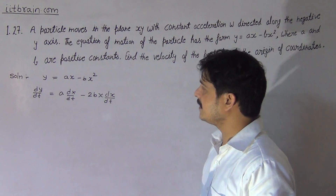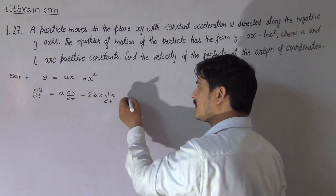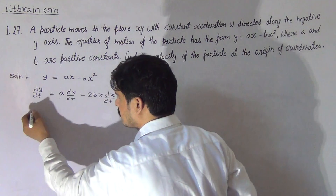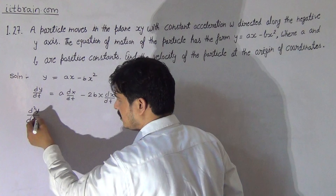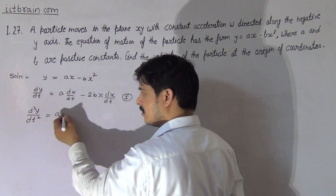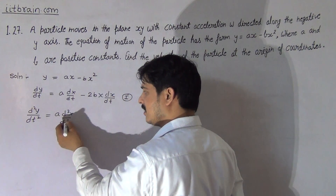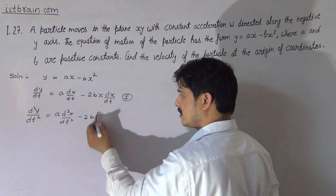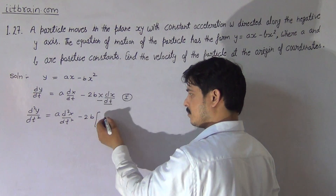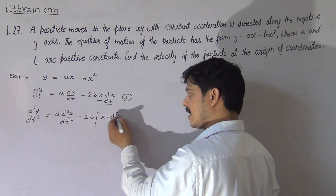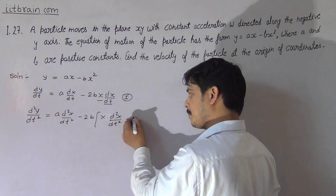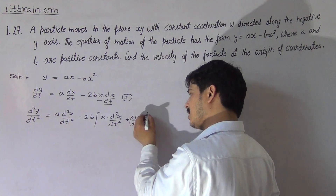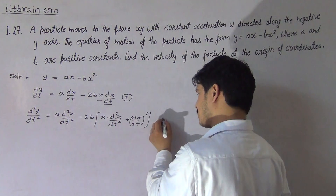So the first equation is: dy/dt = a(dx/dt) - 2bx(dx/dt). Differentiating again with respect to time, we get d²y/dt² = a(d²x/dt²) - 2b[x(d²x/dt²) + (dx/dt)²]. Here 2b is a constant, and the product rule gives x(d²x/dt²) plus (dx/dt)². This is the second equation.